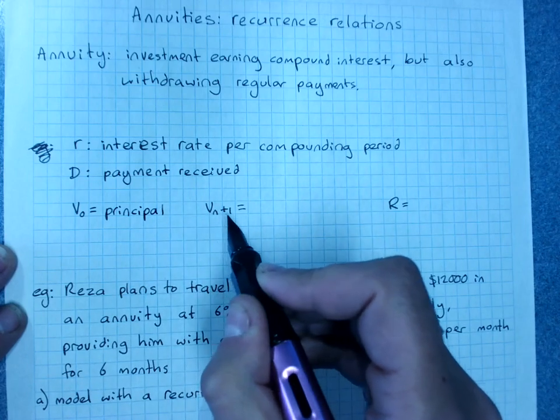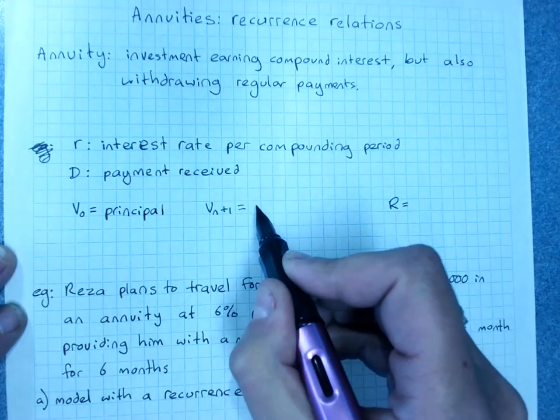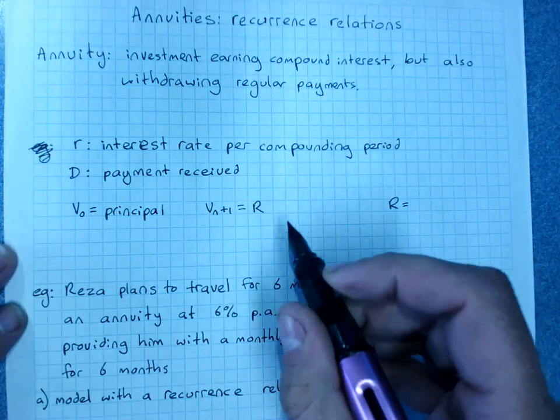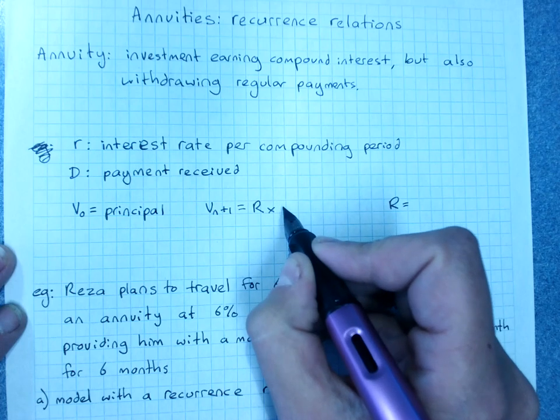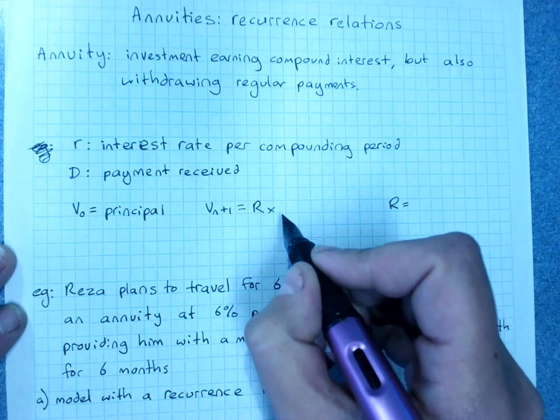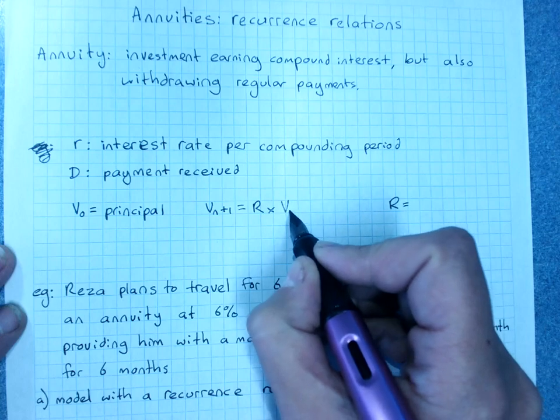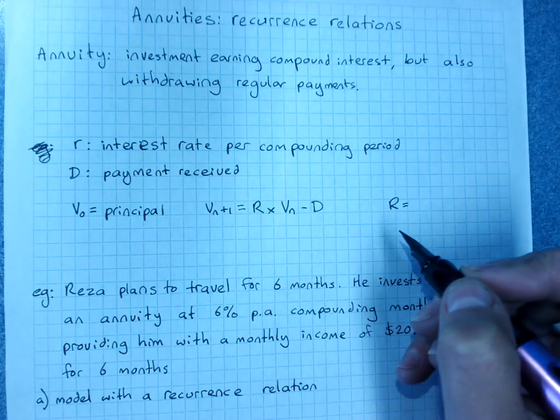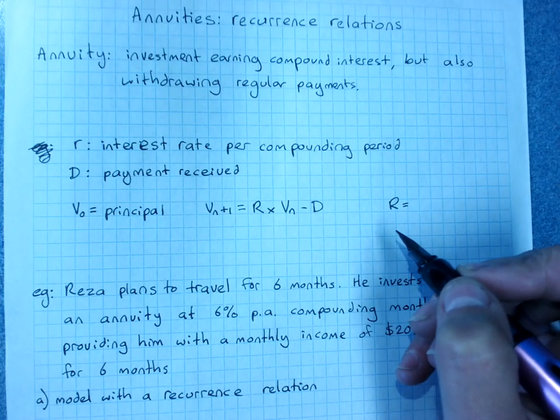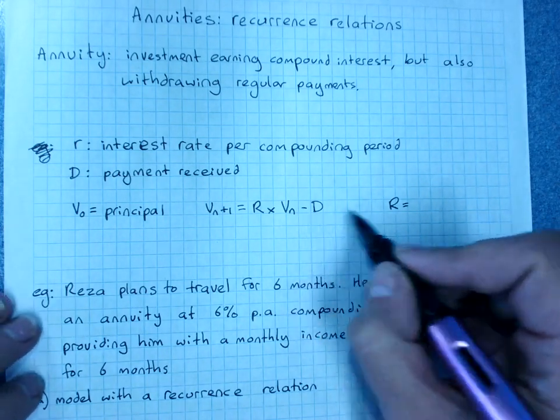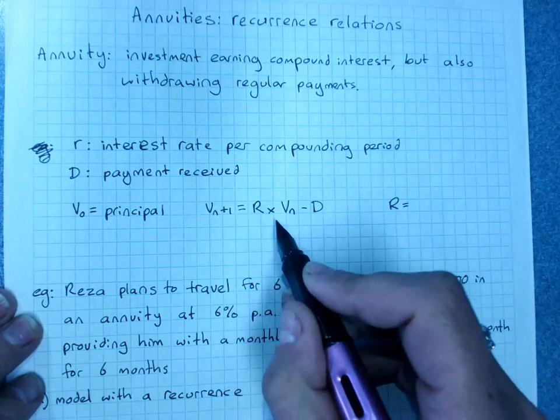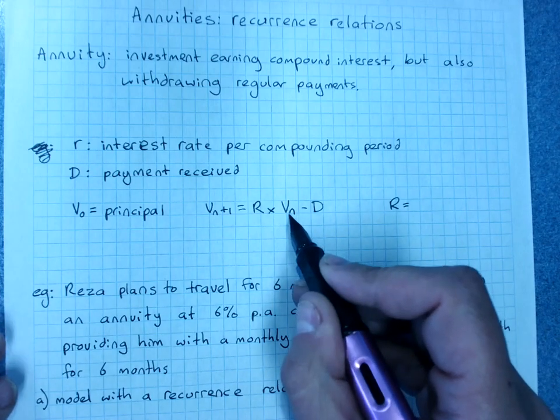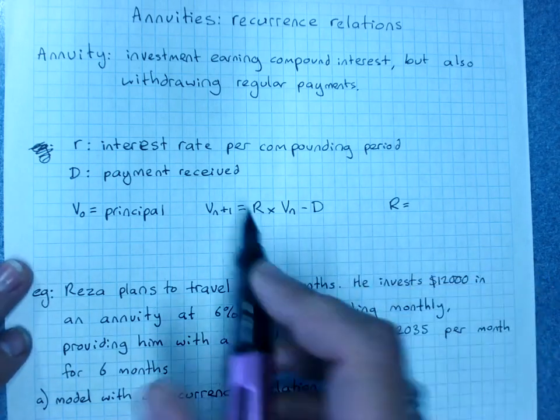The value at n plus 1 is R, and you'll remember we do capital R, and we'll redefine that, times the previous value minus our common difference, our repayment. And we get our R. So there's a typo in your textbook on this. It says V0 just here, and I had to do a quick double take. Just don't be tricked. It's Vn like it always was. V0 is our principal.